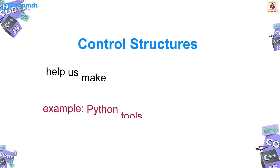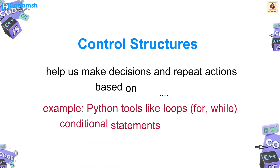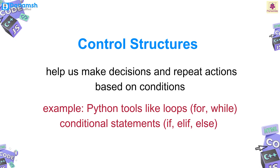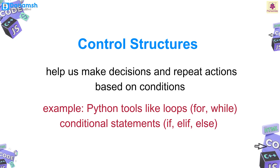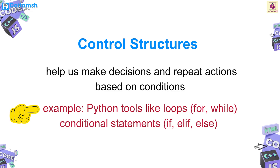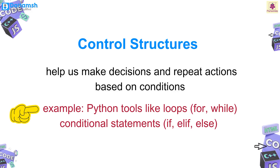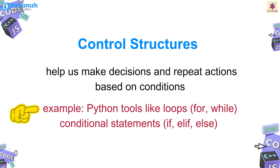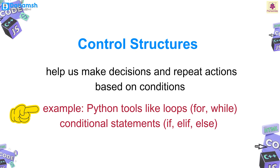Control structures help us make decisions and repeat actions based on conditions. For example, Python tools like loops — for, while — and conditional statements — if, elif, else — control program flow.